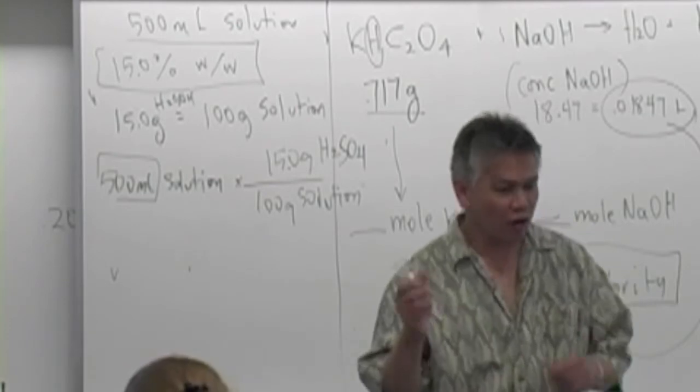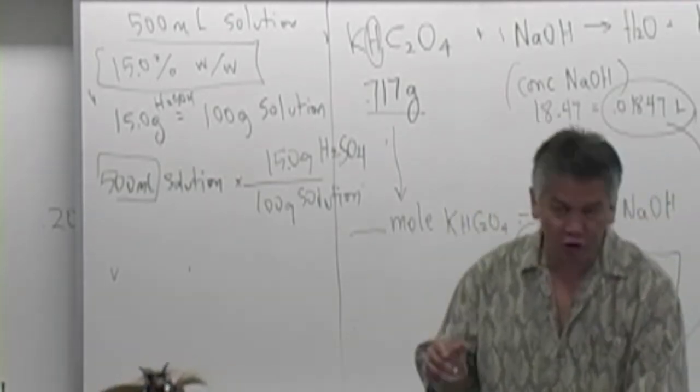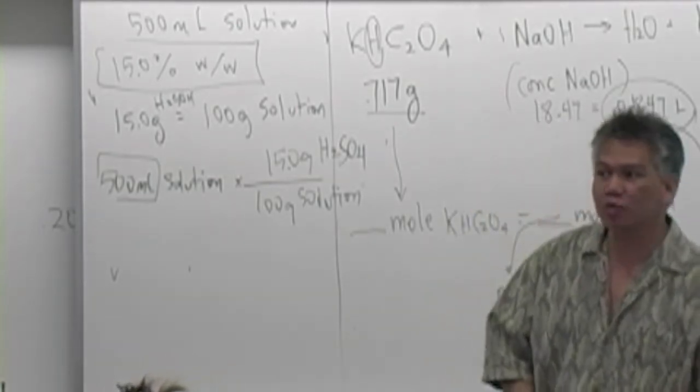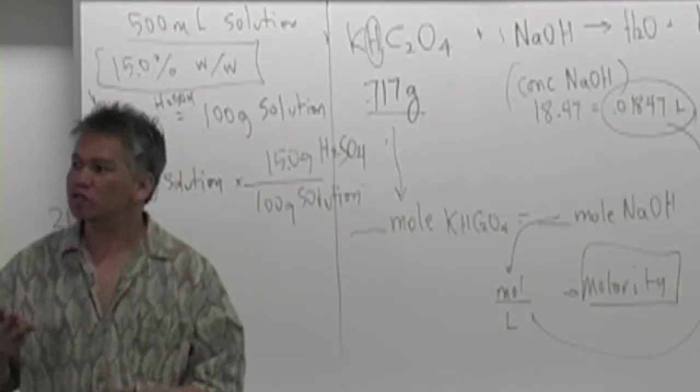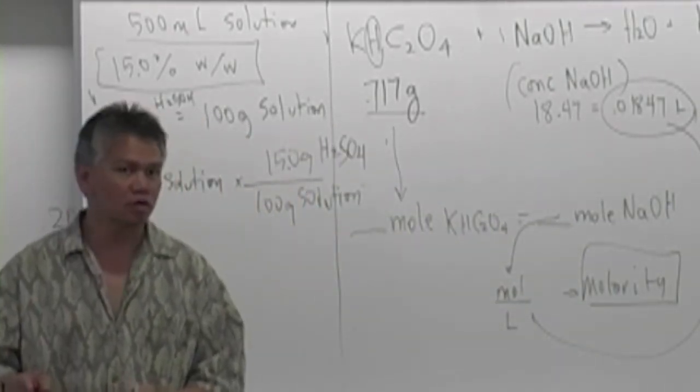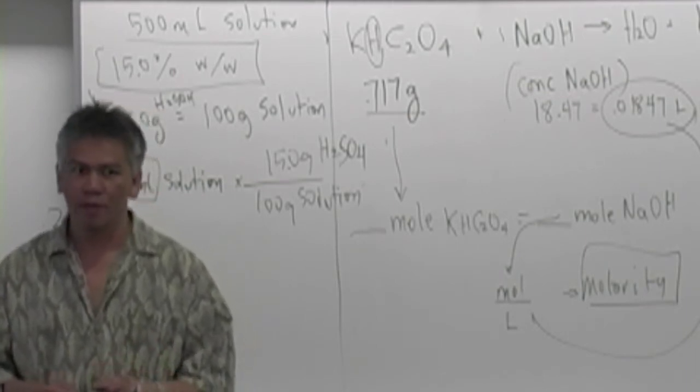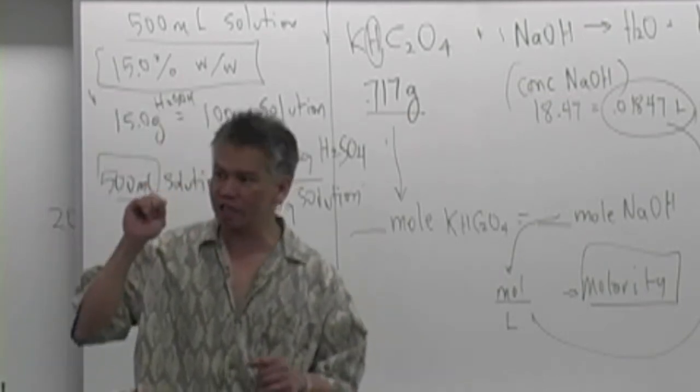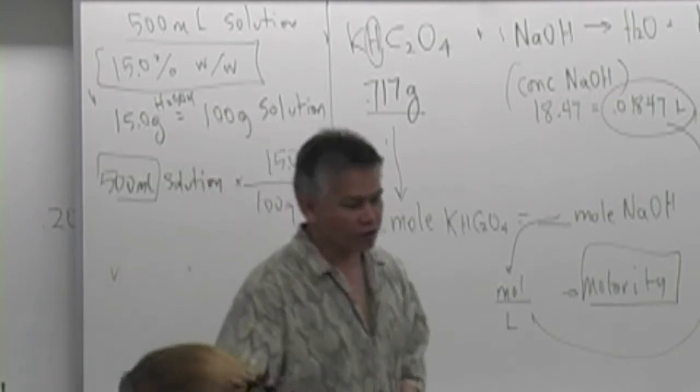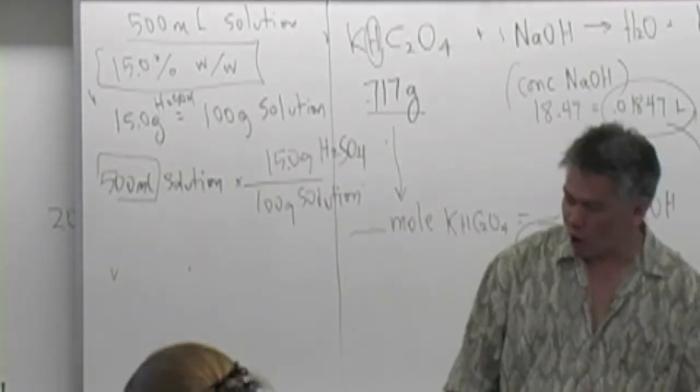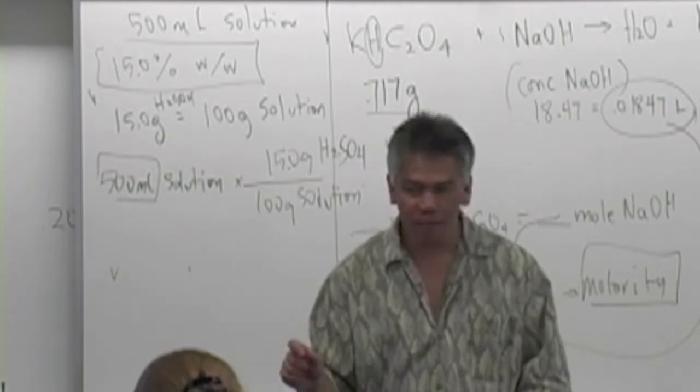You guys are going to be using the beakers in your locker. What you will do is you're going to do this particular experiment in triplicate, means that you're going to do three trials of the same solution. Don't do different solutions. You'll be assigned an unknown. Suppose you're assigned unknown number one. First thing you want to do is you want to take your beaker.